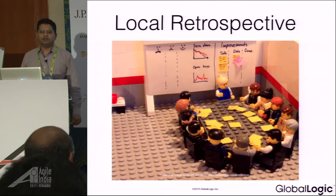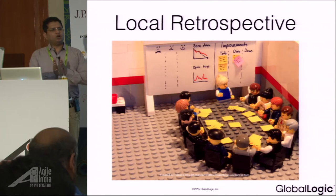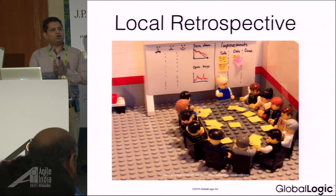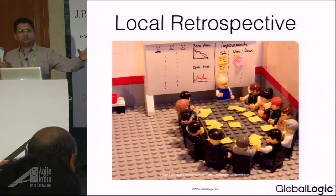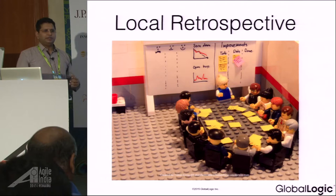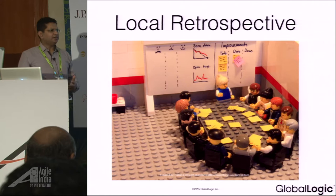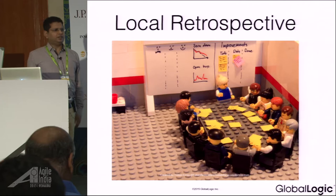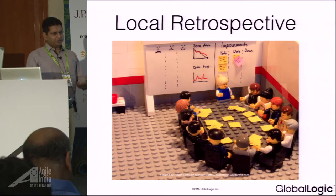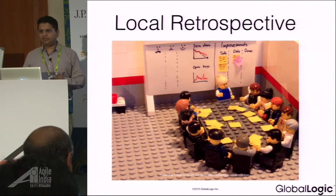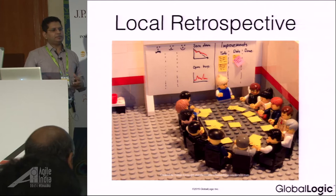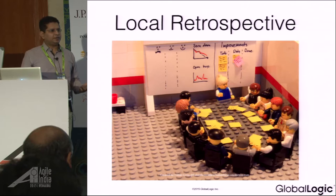Local retrospective — we felt this was very important when we started working as a vendor with a customer in an augmented team. There were some developers in Netherlands and some working from India. The problem is that in a distributed retrospective, you cannot mention local problems to the customer. For example, 'our infrastructure is not working' or 'I have some problems with my team members here' — you cannot mention those in a distributed retrospective. We were feeling those kinds of forces in our team and were not sure how to handle them because we had no local retrospective.